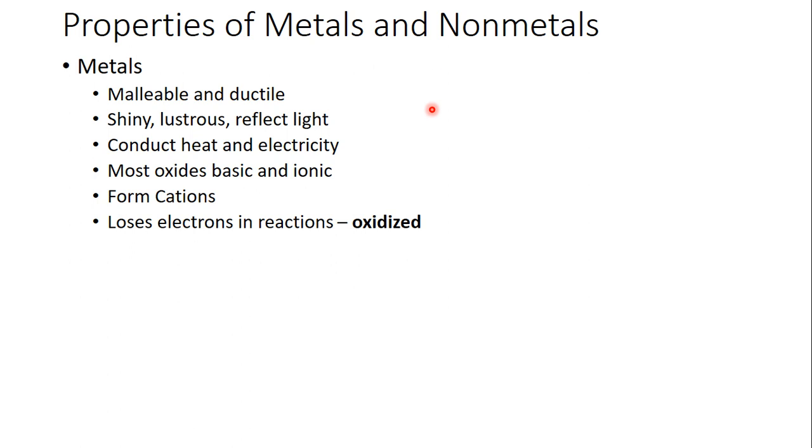The other trends we're going to look at are metals and non-metals. So let's just begin with properties of metals. Metals are malleable and ductile - that is, you can bend them. They're shiny and reflect light, conduct heat and electricity. Most oxides are basic and ionic. They form cations and generally lose electrons or are oxidized.